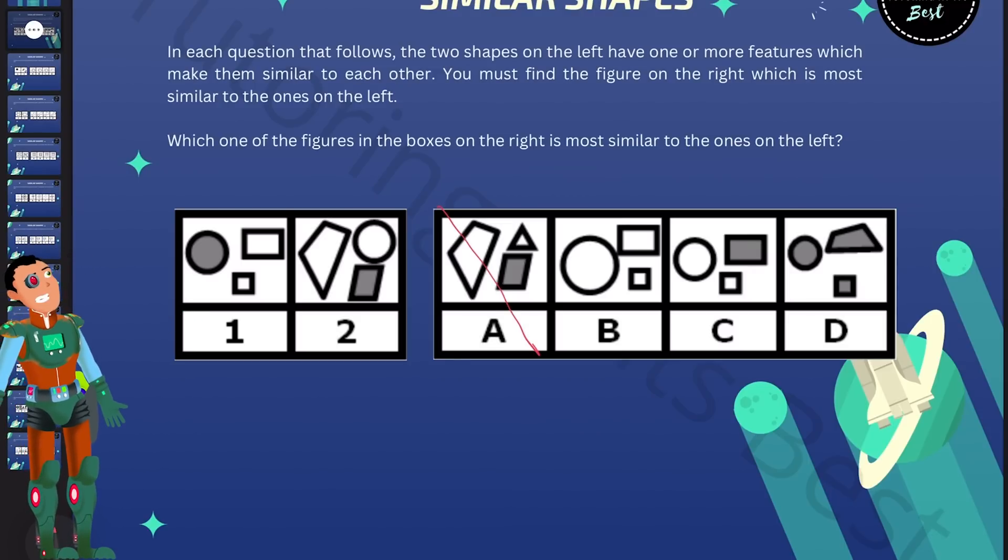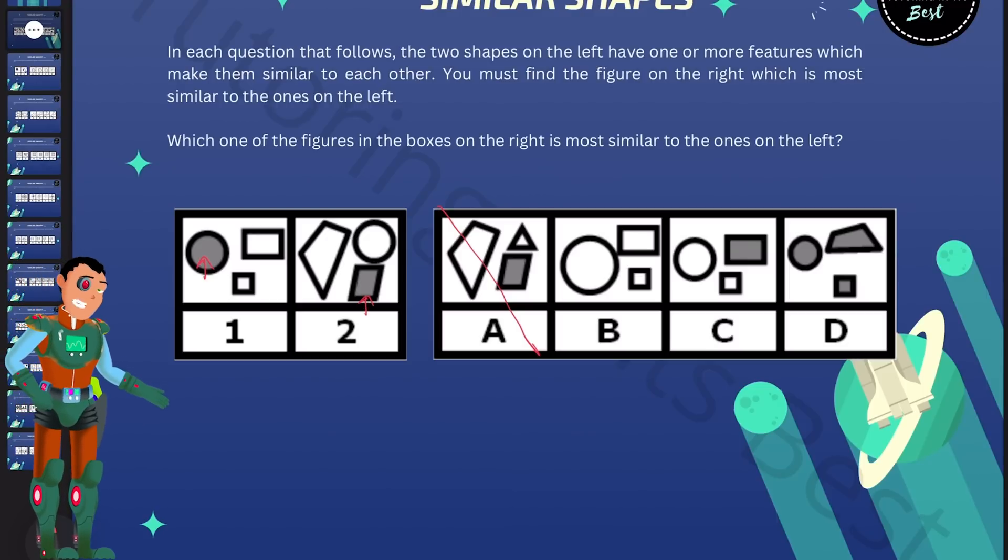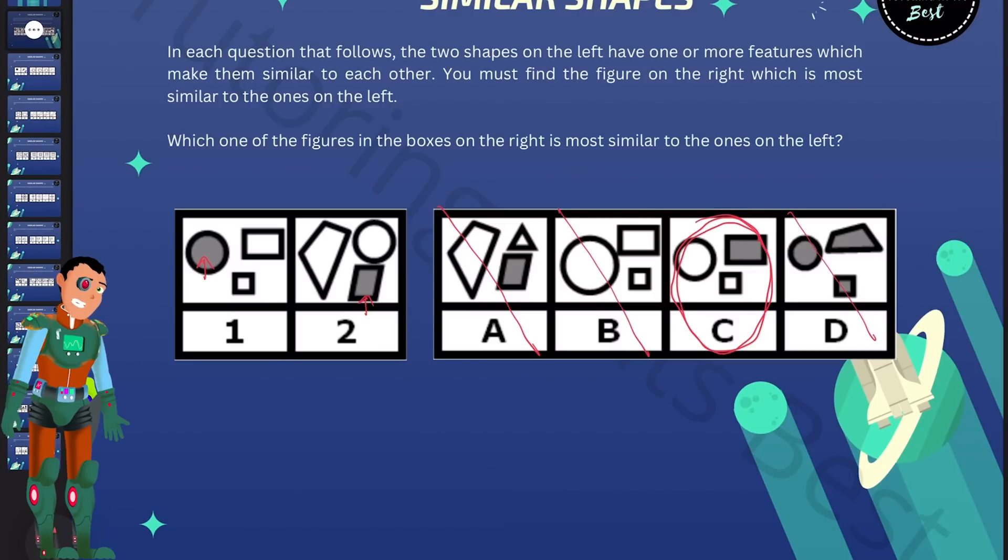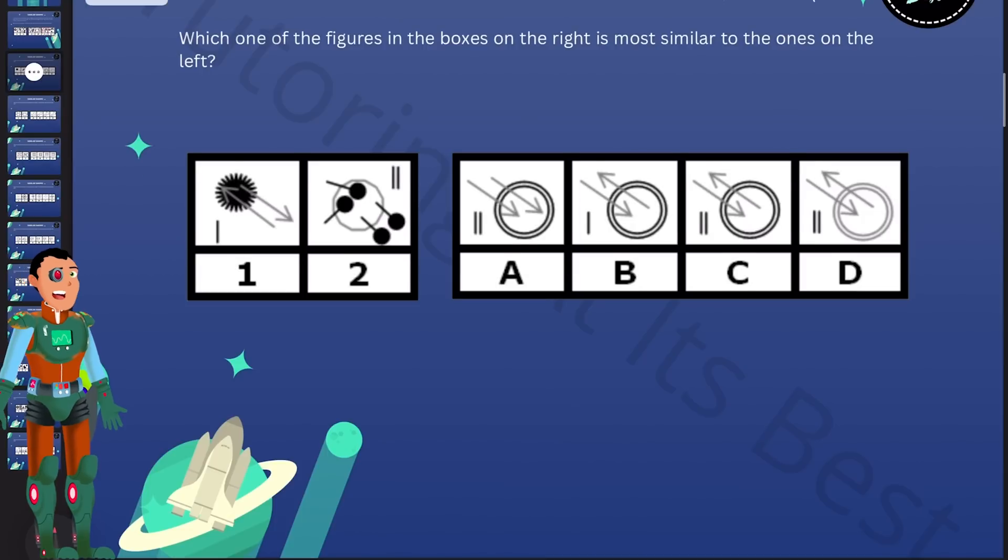However, figures one and two also have one grey shape. Now we can eliminate B because that doesn't have a grey shape and we can certainly eliminate D because they are all grey shapes. So C is our answer. I hope that was clear. Let's now dive into the next question.